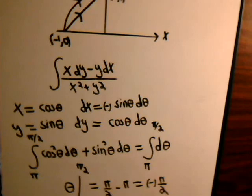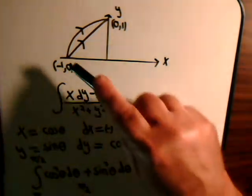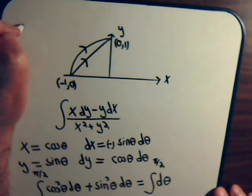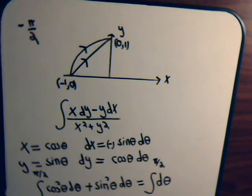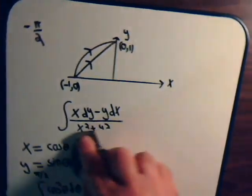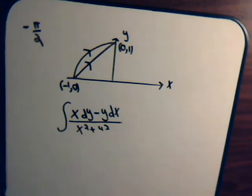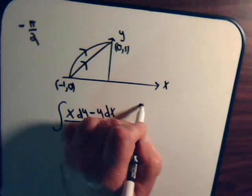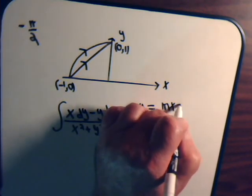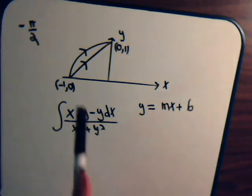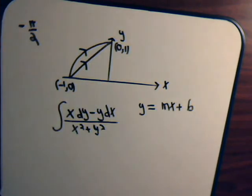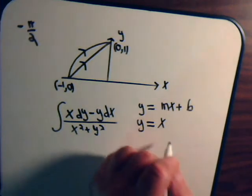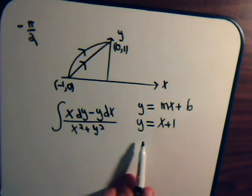Now let's evaluate the same integral over the line segment, and compare that to the circular arc result of minus pi over 2. The general equation for a straight line is y equals mx plus b. The slope is 1 since we go over 1 and up 1. So y equals x plus b. When x is 0, y is 1, so the equation for the line segment is y equals x plus 1.